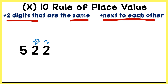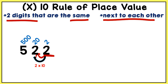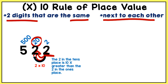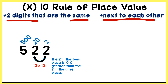So the number 522 follows the times 10 rule of place value. The 2 in the ones place is worth 2, the 2 in the tens place is worth 20, and the hundreds place is worth 500. Moving in this direction, I am multiplying the ones place by 10 — 2 times 10 gives me 20. So I would read this as: the 2 in the tens place is 10 times greater than the 2 in the ones place.